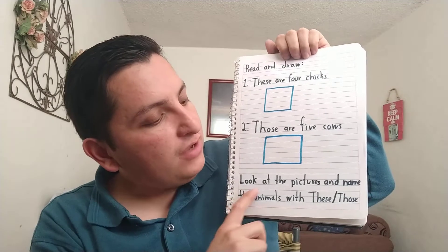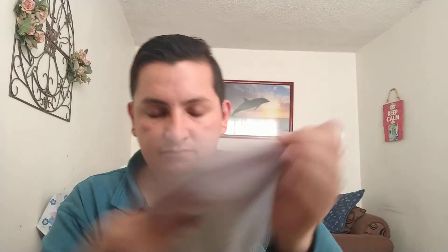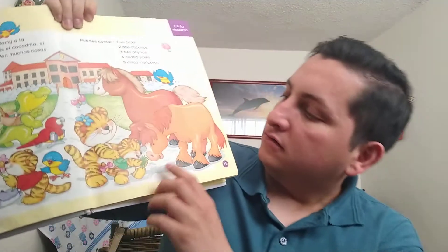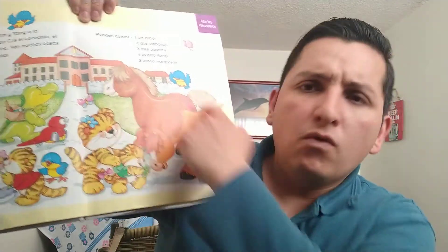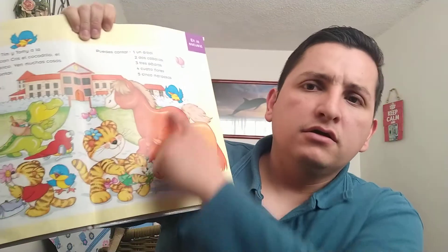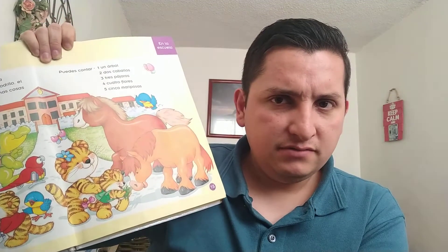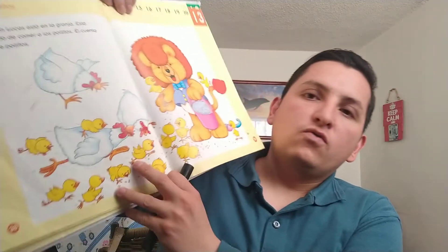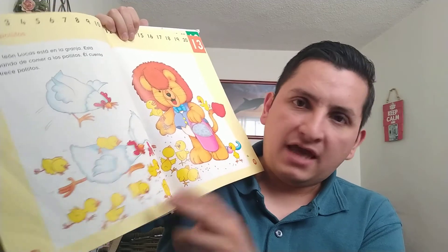Finally, look at the pictures and name the animals with 'these' and 'those.' Here is a mom and a boy — what are these animals? Can you name them? And what are those animals? Can you name them?